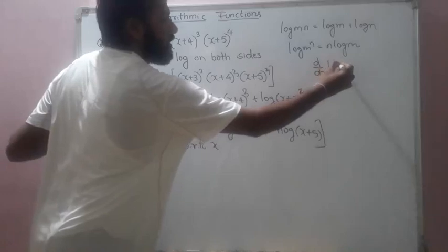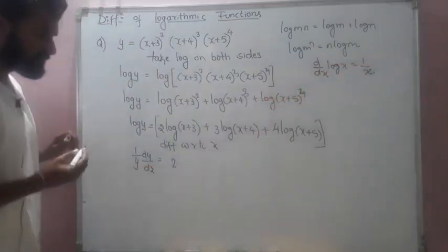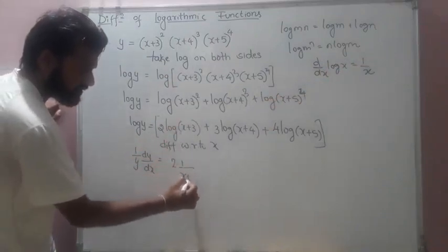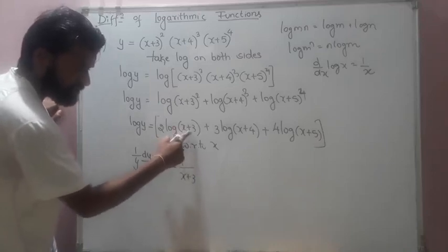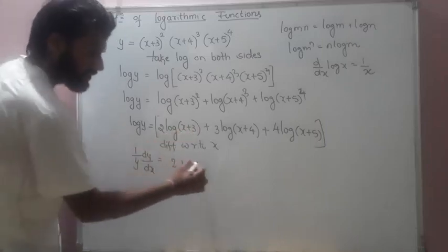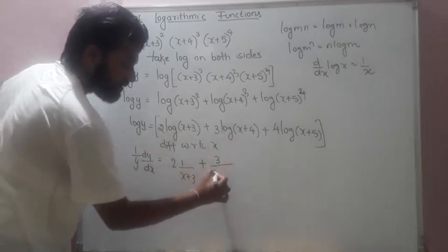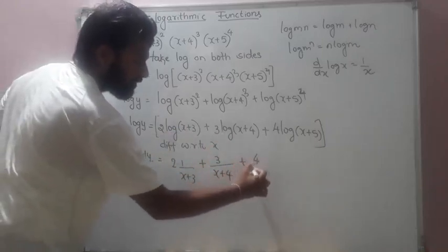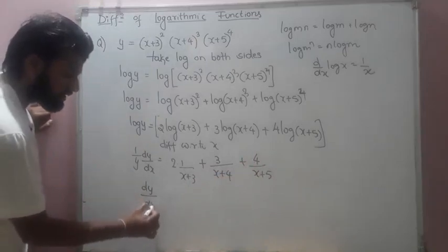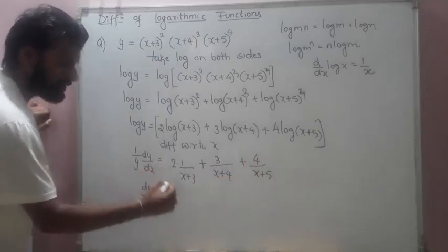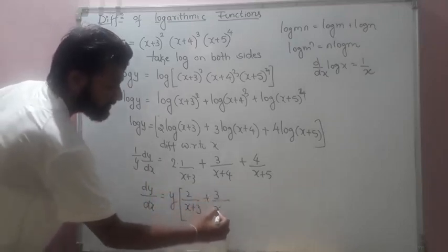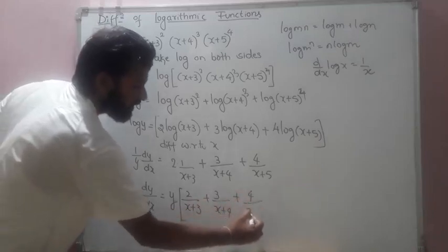Since we have y, I write (1/y)·(dy/dx). Using d/dx[log x] = 1/x, hiding (x+3) gives 1/(x+3) with derivative 1. Similarly the second term gives 3/(x+4) and the third gives 4/(x+5). In the last step, dy/dx = y · [2/(x+3) + 3/(x+4) + 4/(x+5)].